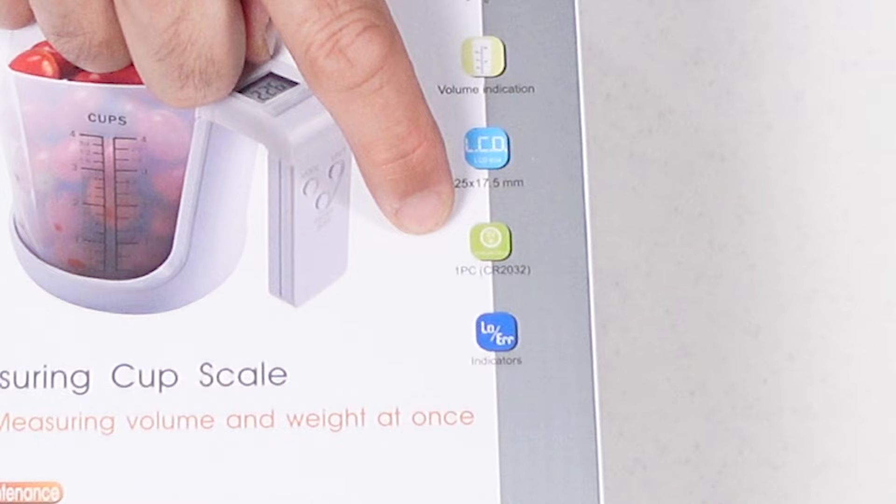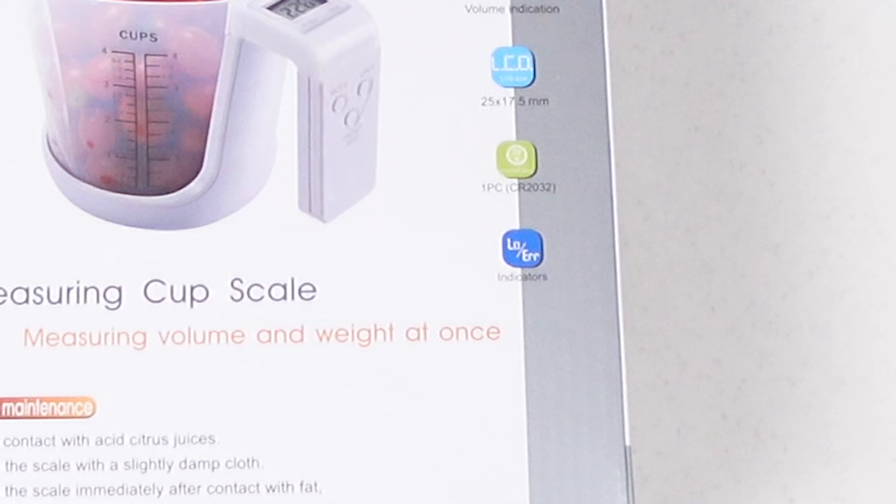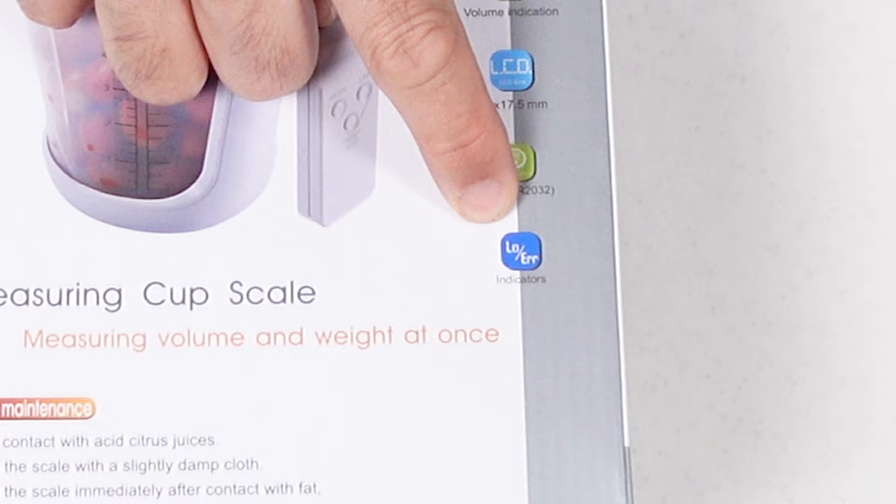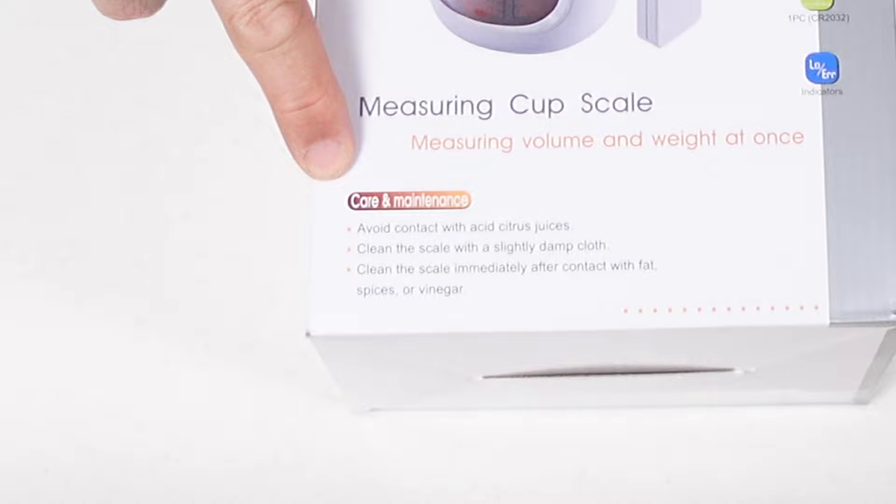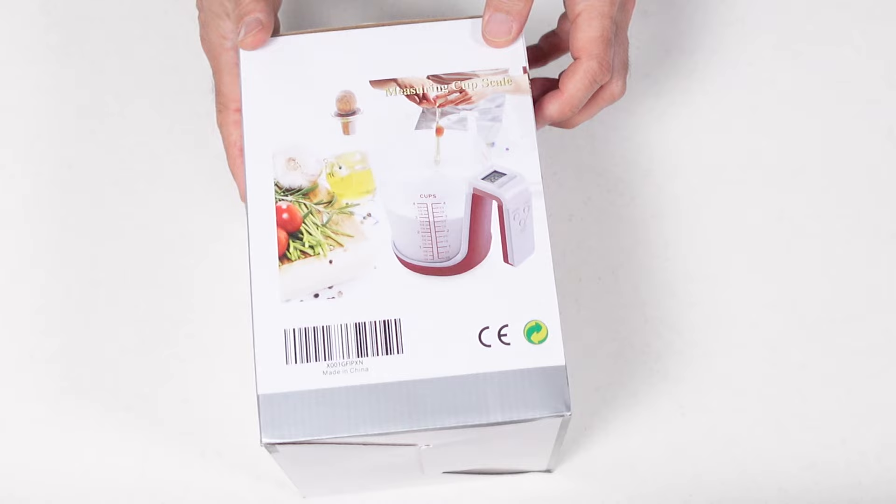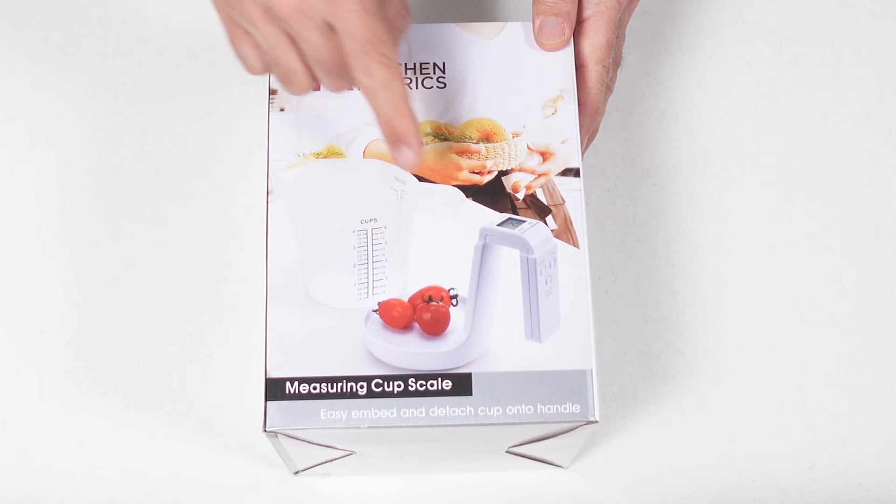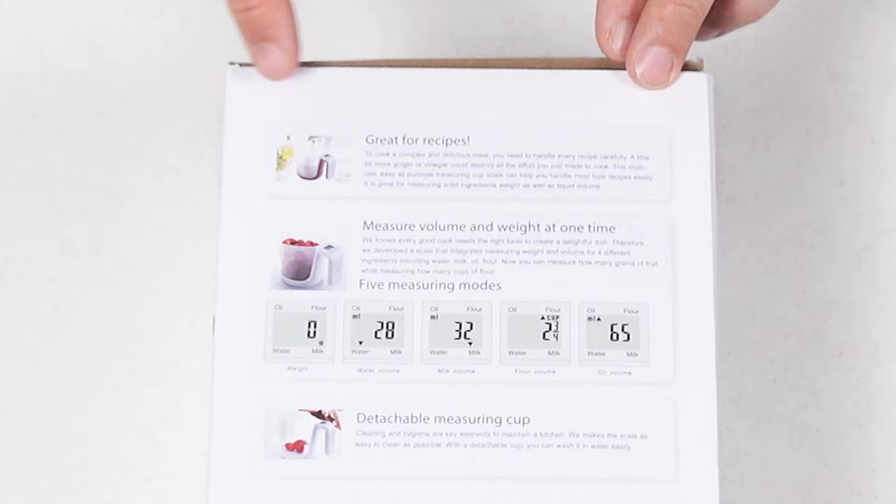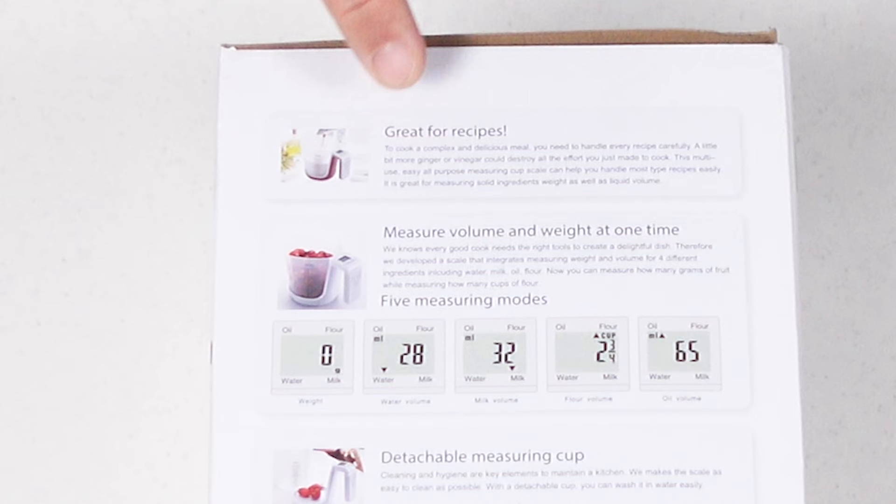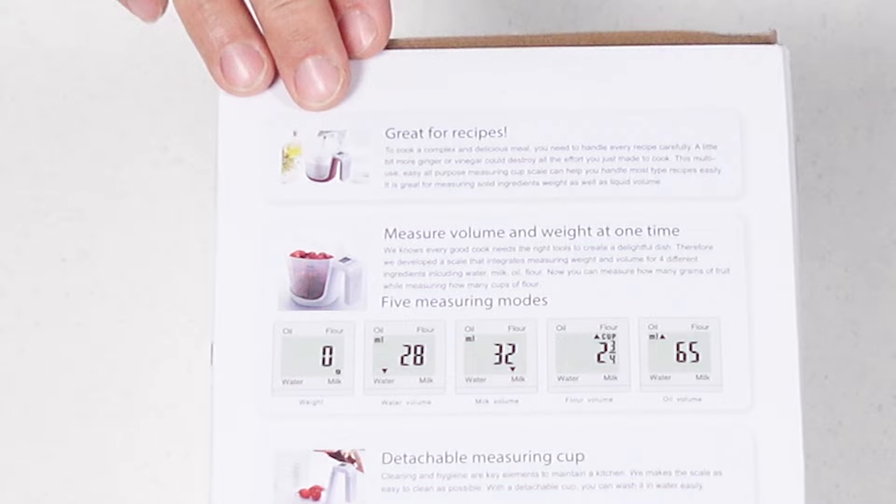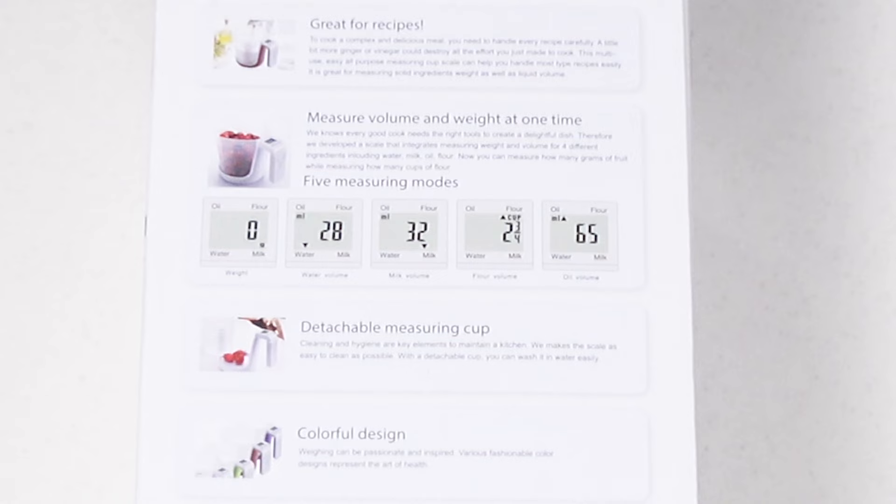Thank God I like this better than the other one already. And it's got indicators for low power or errors. The care and maintenance information is on the outside of the box. There's a picture of the measuring cup in action. There's a picture of the scale in action. Back here you see that it's great for recipes.